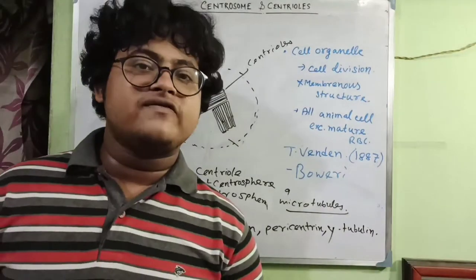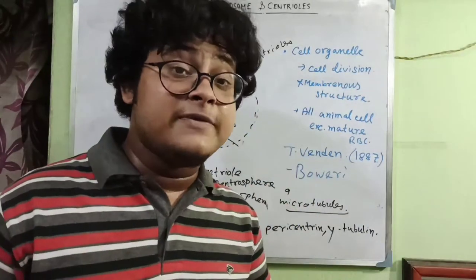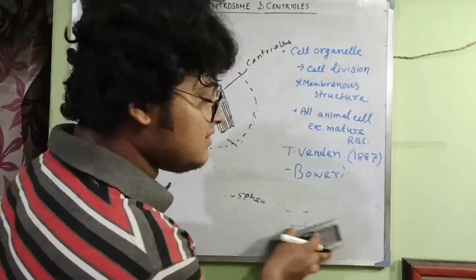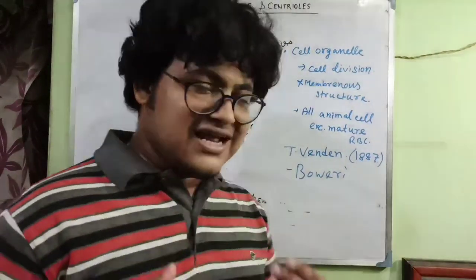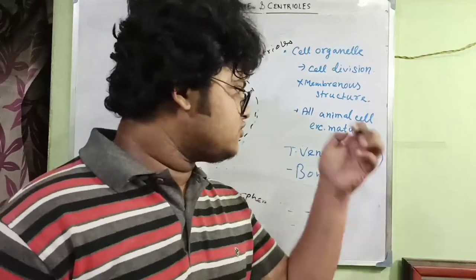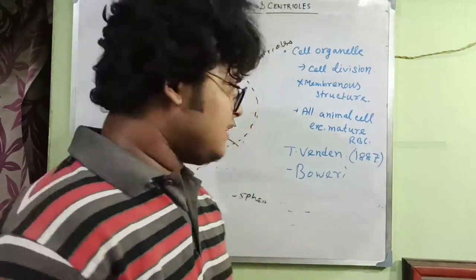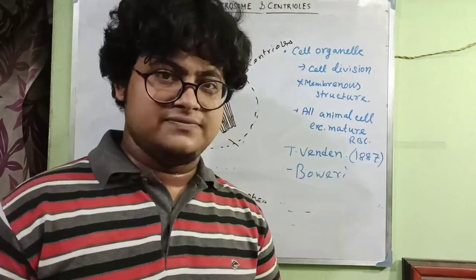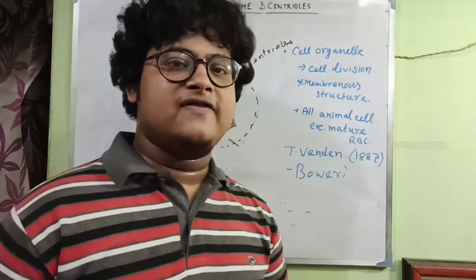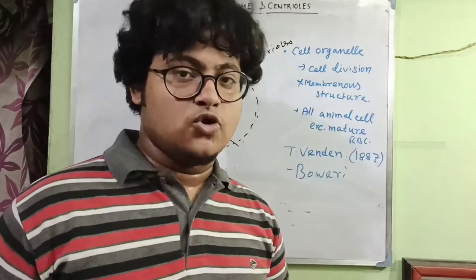The job of the centrosome is to help in cell division. During the cell cycle, in G1 phase the centrosome number is one. During S phase, the centrosome replicates and becomes double. Even though centrioles are devoid of DNA or RNA, they can still replicate during S phase.